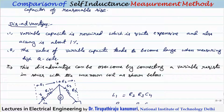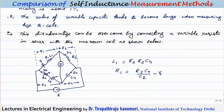As the Q of the coil increases, a larger capacitor value is required. This disadvantage can be overcome by inserting a variable resistance R in series with the unknown inductor. With this modification, L1 = R2R3C4 and R1 = R3C4/C2 − R.